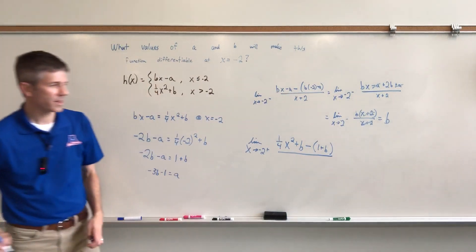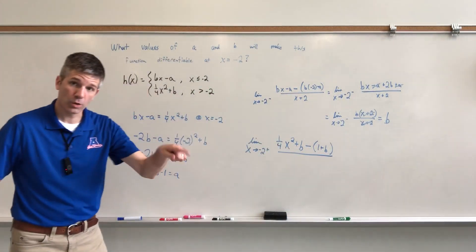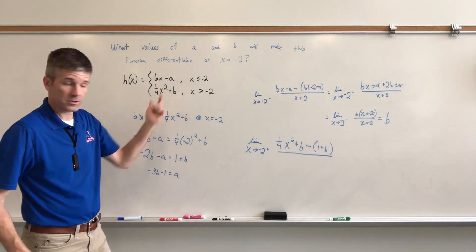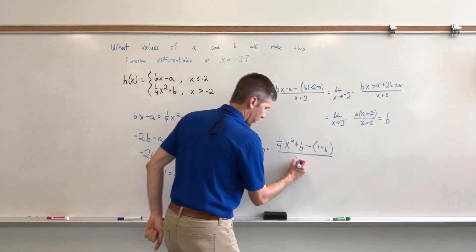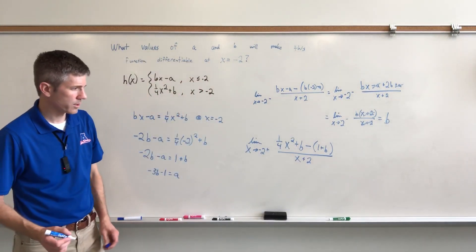Again, this is what I get when I plug a negative 2 in to this piece of the function. And then on the bottom of the denominator, I'll have X minus negative 2, so X plus 2. And we will continue to work this out.